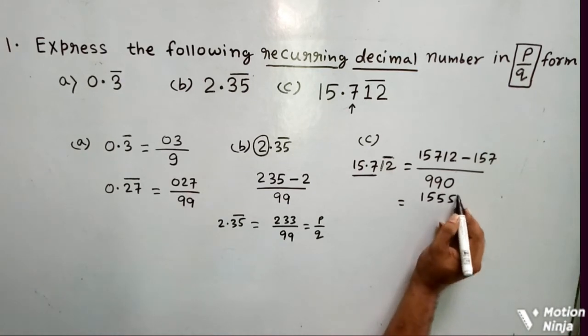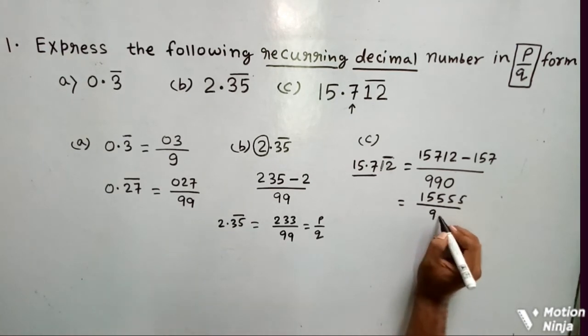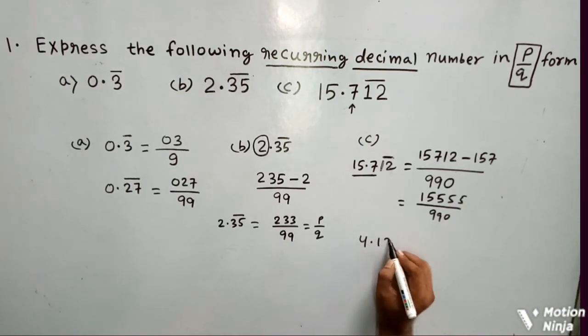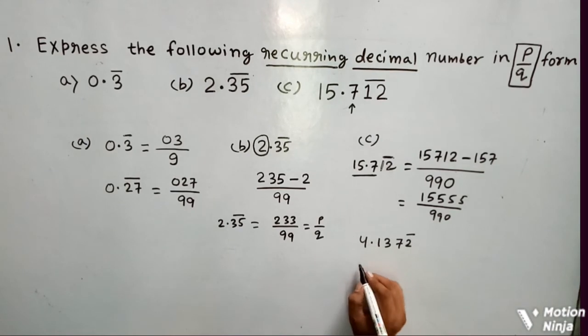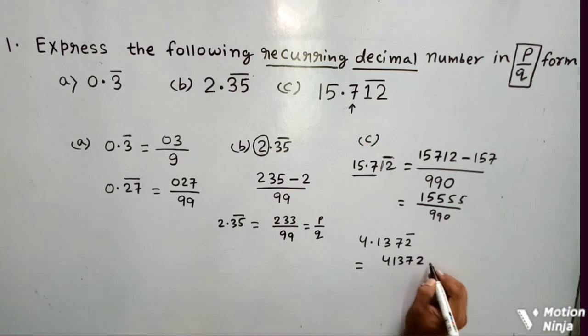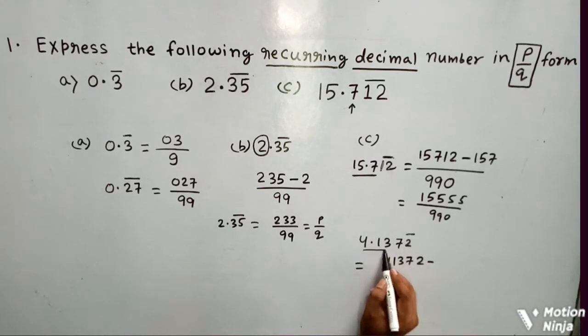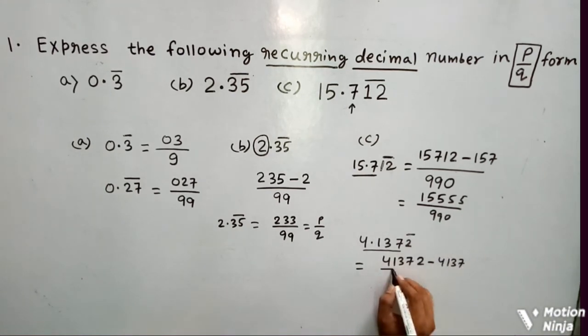If I take one more example: 4.1372 bar, and if I give a bar on 2, then we will write 41372 minus... See, before the number, before the digits where the bar starts, what is the number? 4137. So I will subtract 4137 by...